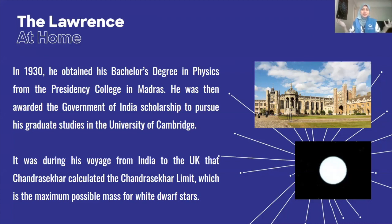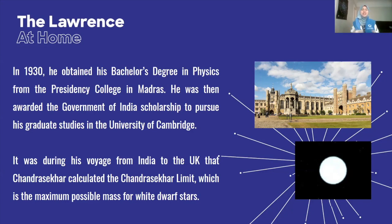He was then awarded the Government of India scholarship to pursue his graduate studies at the University of Cambridge in the United Kingdom. So even though he started by being homeschooled, he was still able to show his intelligence and his excellence, and he was able to get the opportunity to pursue his education further abroad. And it was actually during his voyage from India to the United Kingdom that Chandrasekhar calculated the Chandrasekhar limit, which is basically the maximum possible mass for white dwarf stars. A white dwarf is basically a remnant star — it is what stars like our sun will turn into after they get older.